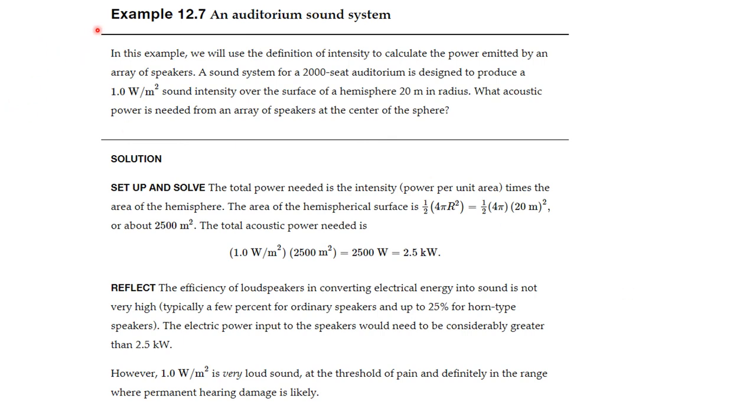Let's consider an example. In this example, we use the definition of intensity to calculate the average power emitted by an array of speakers. A sound system for a 2,000 seat auditorium is designed to produce a 1.0 watt per square meter sound intensity over the surface of a hemisphere, 20 meters in radius. What acoustic power is needed from an array of speakers at the center of the sphere?